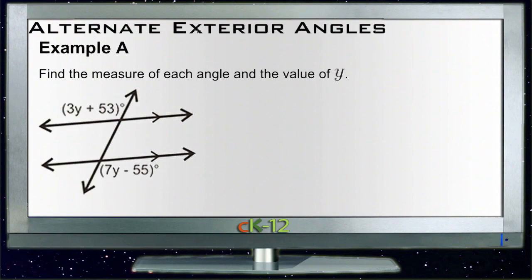Okay, let's take a look at the examples for alternate exterior angles. Our first Example A says find the measure of each angle and the value of y. This is very similar to a couple of examples we did in another lesson.